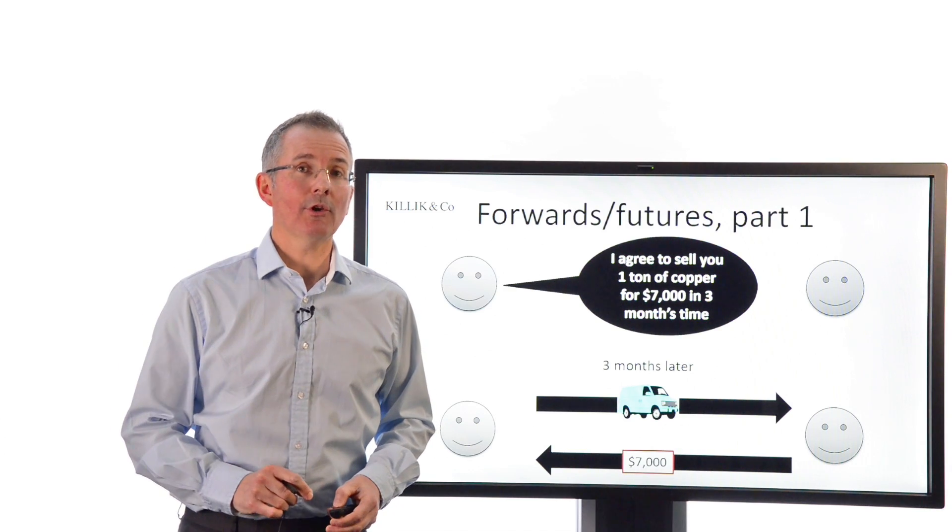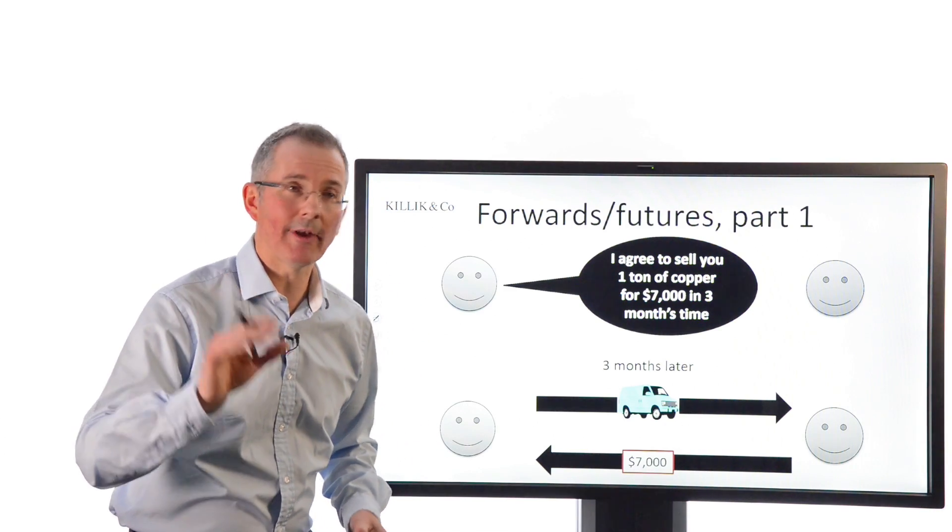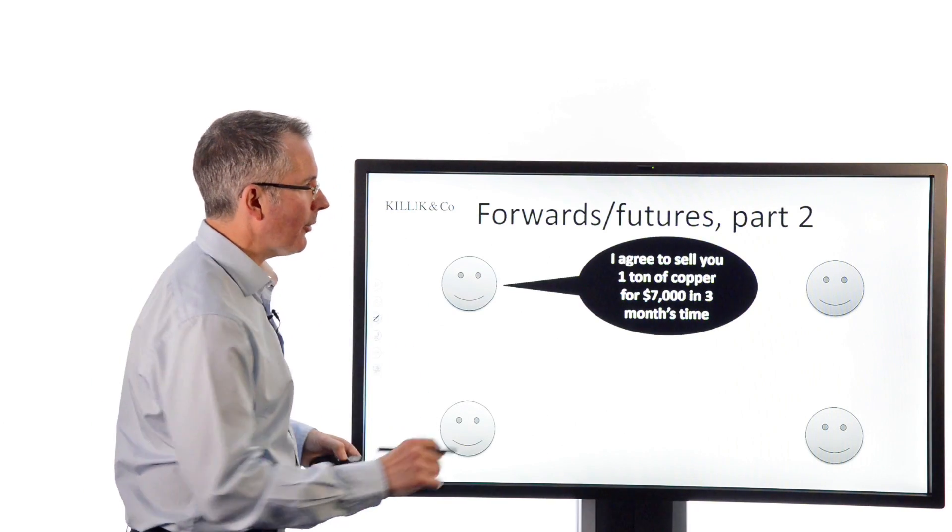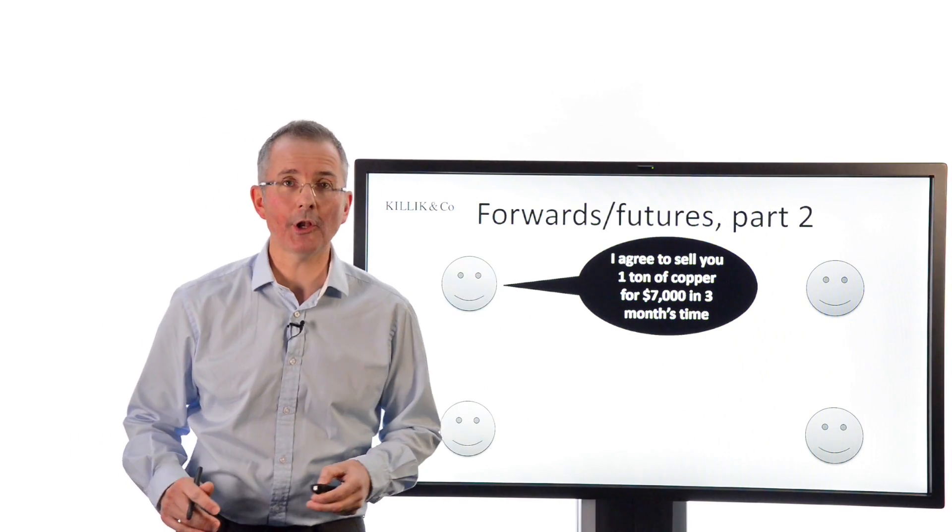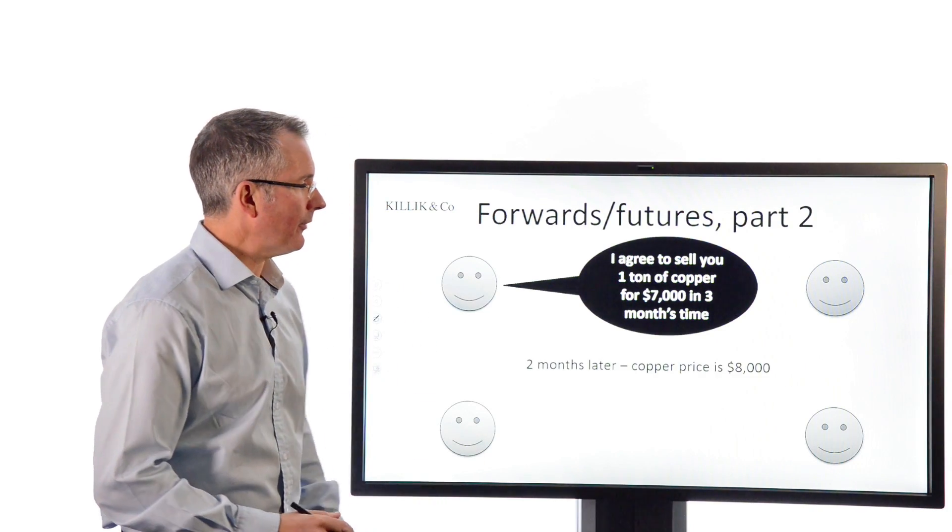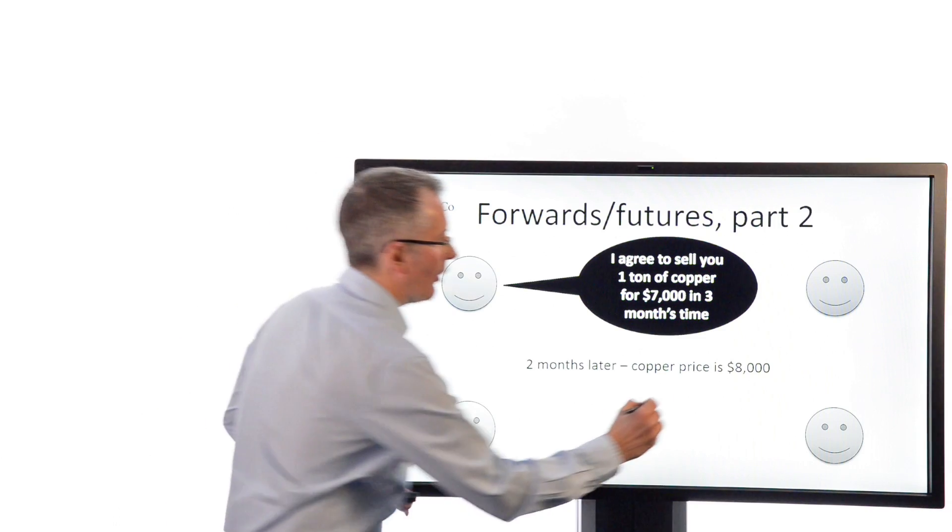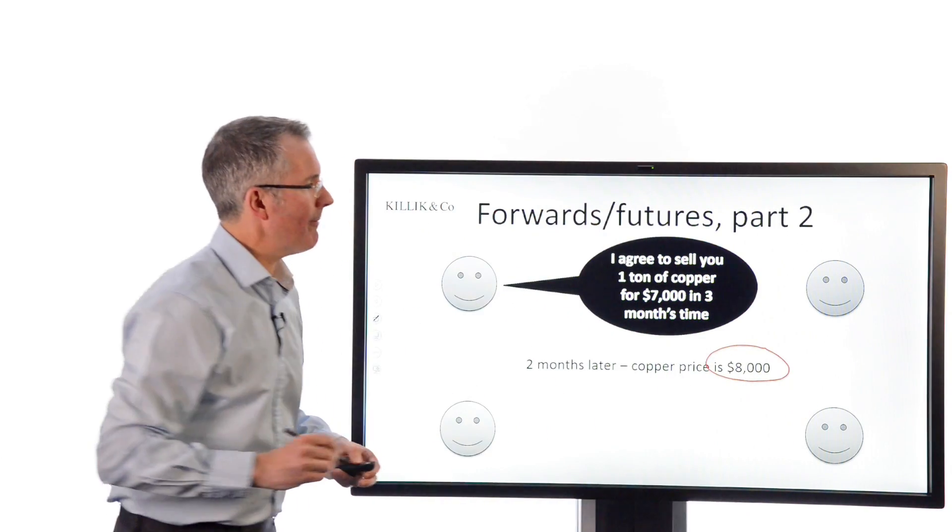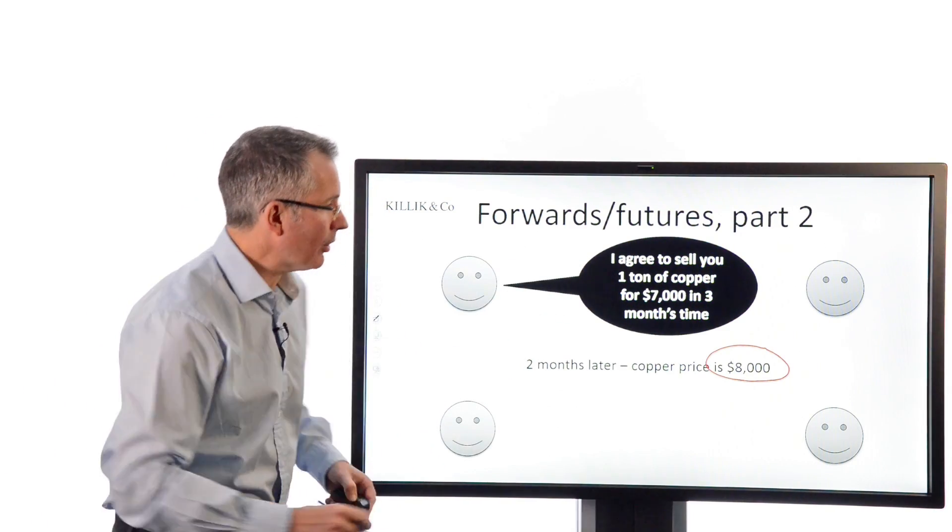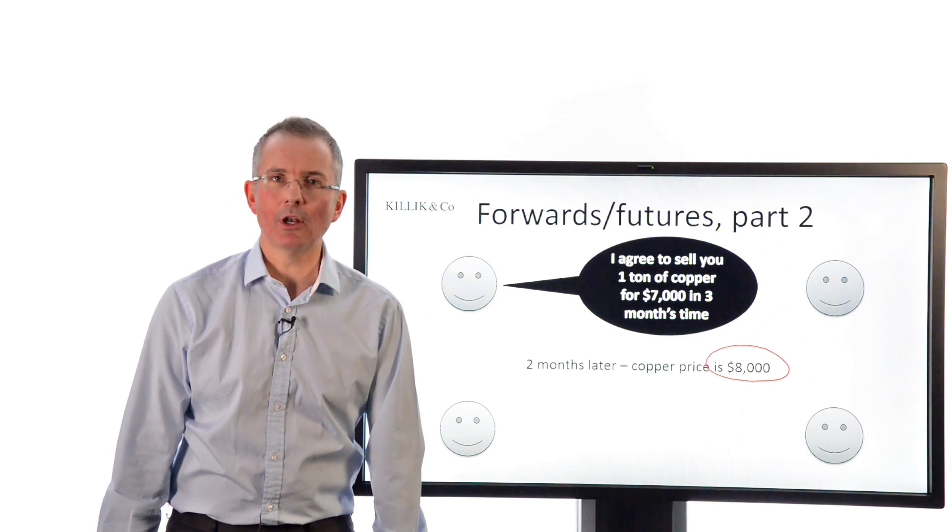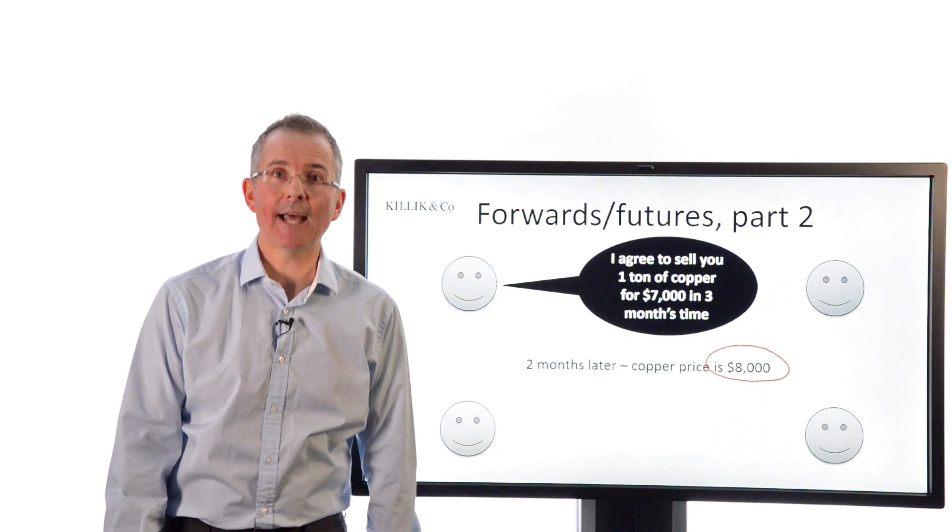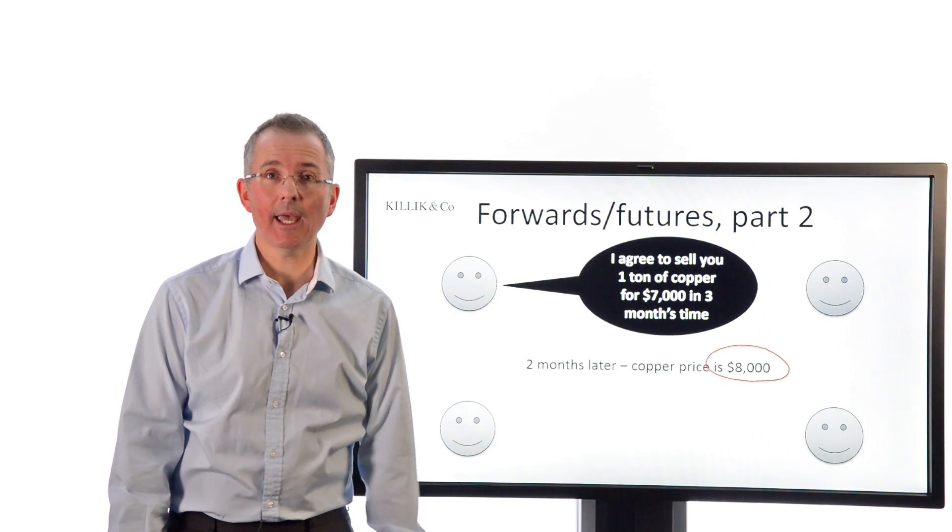However, speculators can also play around with these contracts. Let's do the same contract from the start, but just adjust the facts slightly. I agree to sell you one tonne of copper for $7,000 in three months' time. Same opening contract. Two months go by and the copper price has moved up to $8,000. This is the market price of copper on the metals exchange, nothing to do with the fixed price contract that these two have signed. If you're the person on the left, you'd be thinking, I shouldn't have locked in to sell for $7,000. I can already get $8,000 and the contract's not even finished yet. The guy on the right is thinking, glad I signed that contract because without it, I'd be paying the market $8,000.